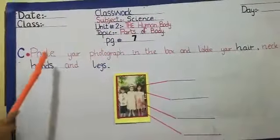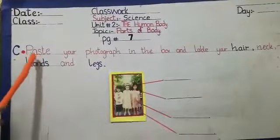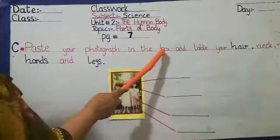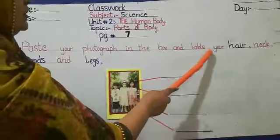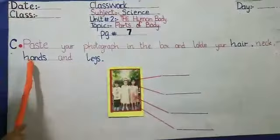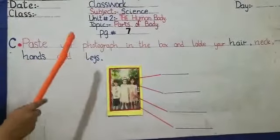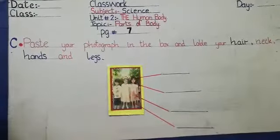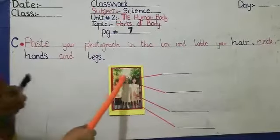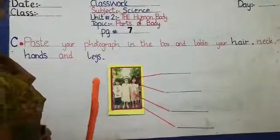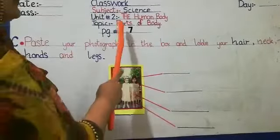Yes dear students, page number is 7. The activity on page 7 is: paste your photograph in the box and label your hair, neck, hands and legs. You have to paste your picture, your photograph, and then label your hair, neck, hands and legs.